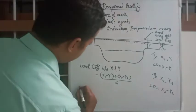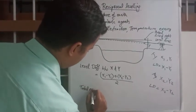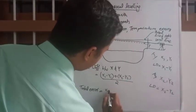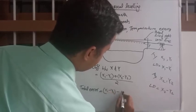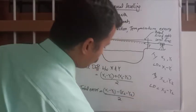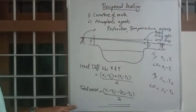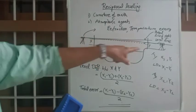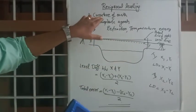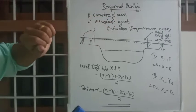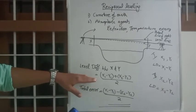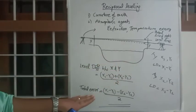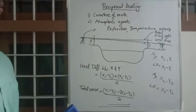There is one more equation for total error: we change the plus sign to minus — that is, (x1 minus y1) minus (x2 minus y2), divided by 2. So those are the only things you need to know about reciprocal leveling. It is adopted when there is an inaccessible area between two stations and where we suspect curvature of earth error and atmospheric error. The formula is: (x1 minus y1) plus (x2 minus y2) divided by 2.